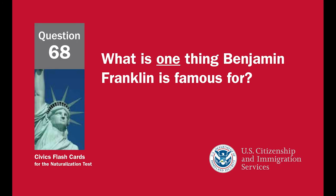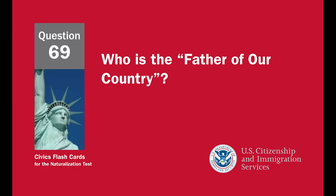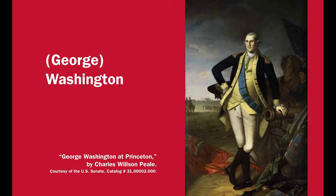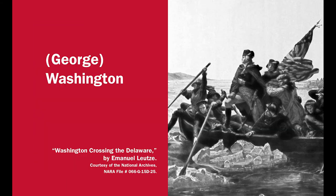Name one of the writers of the Federalist Papers. James Madison or Alexander Hamilton. What is one thing Benjamin Franklin is famous for? U.S. diplomat, oldest member of the Constitutional Convention, first postmaster general of the United States, writer of Poor Richard's Almanac, or started the first free libraries. Who is the father of our country? George Washington. Who was the first president? George Washington.